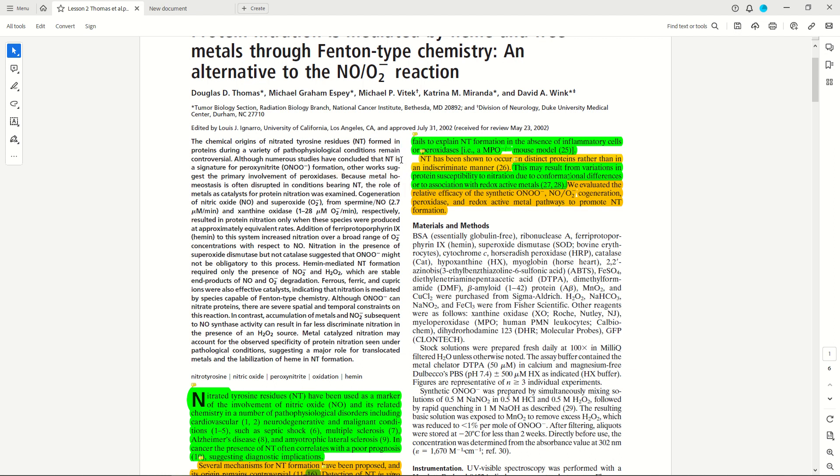This continues to the final paragraph. NT has been shown to occur in distinct proteins rather than in an indiscriminate manner. So this is providing some sort of clue as to what might address this knowledge gap. And so they say in the next sentence, which is also highlighted in green, this may result from variations in protein susceptibility to nitration due to conformational differences or to association of redox active metals. This is the hypothesis of the paper.